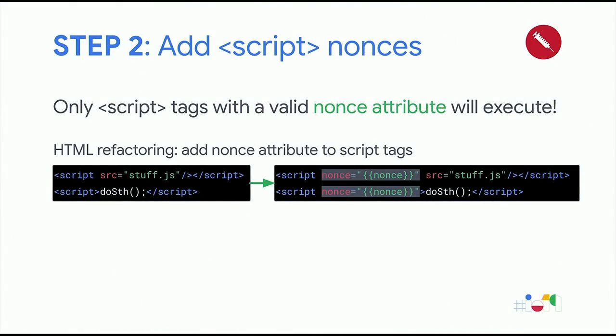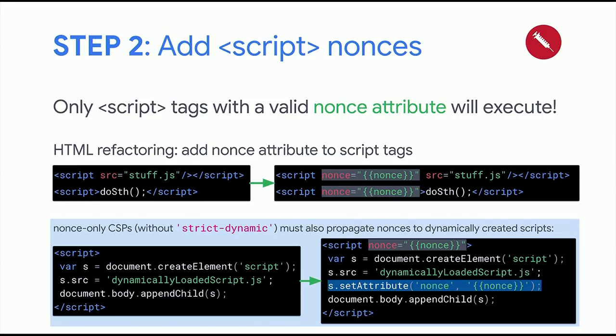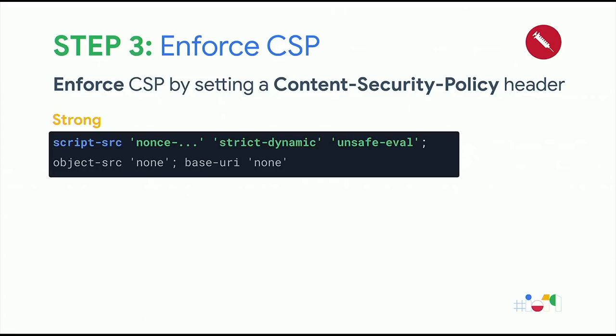Step two: make sure all legitimate scripts on your site have the nonce attribute set, otherwise the browser will block execution. Usually you update your server-side templates to include the nonce attribute. Since the nonce is generated on the server, the server knows the nonce for a response — put the nonce in the script tag and also use the same nonce in the response header for the content security policy. If you can use a nonce-only CSP without strict-dynamic because you have no third-party JavaScript dependencies, you also have to propagate the nonce to dynamically created script tags using the setAttribute method.